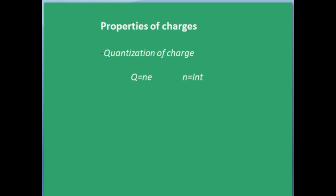Quantization of charge. This is important. All the free charges are integral multiples of a basic unit of charge denoted by e. Q = ne is the mathematical form of this property, where n is any integer - positive, negative, or zero. The basic unit of charge is the charge on an electron. By standard convention, charge on an electron is taken as negative, therefore charge on electron is negative e and proton has opposite charge, so it is positive.